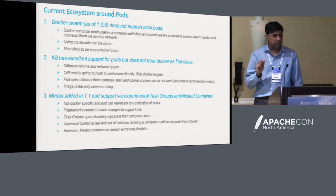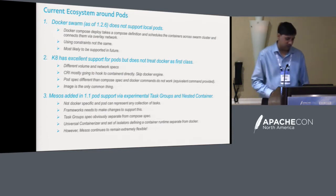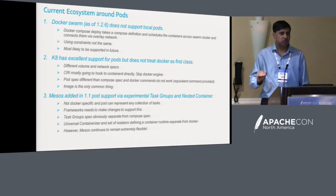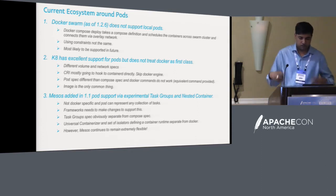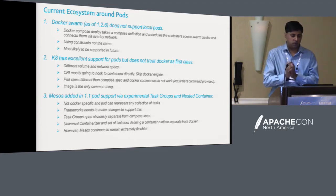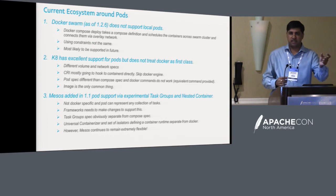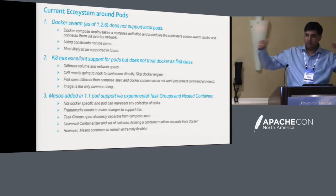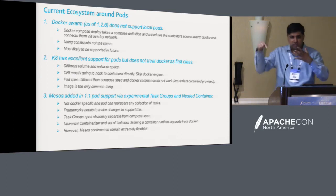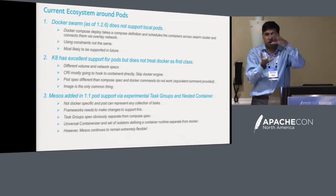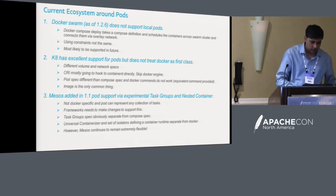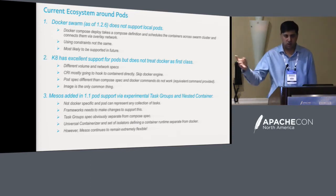Looking at the current ecosystem around pods: Docker Swarm as of 1.2.6 does not support native local pods. What they have is Docker Compose 3.x integration with Docker Swarm, where you can launch containers that land on multiple hosts with an overlay network so they can communicate. But they are not treated as a single unit co-located sharing cgroups or namespaces — so it is not a pod.